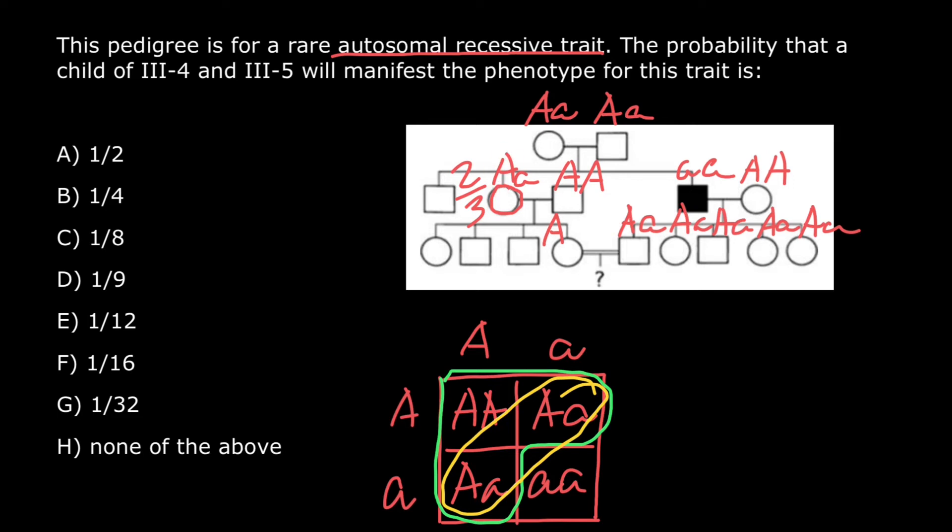But mother can give either dominant allele or recessive allele. And probability that she is going to give recessive allele to her daughter is going to be 1 out of 2.